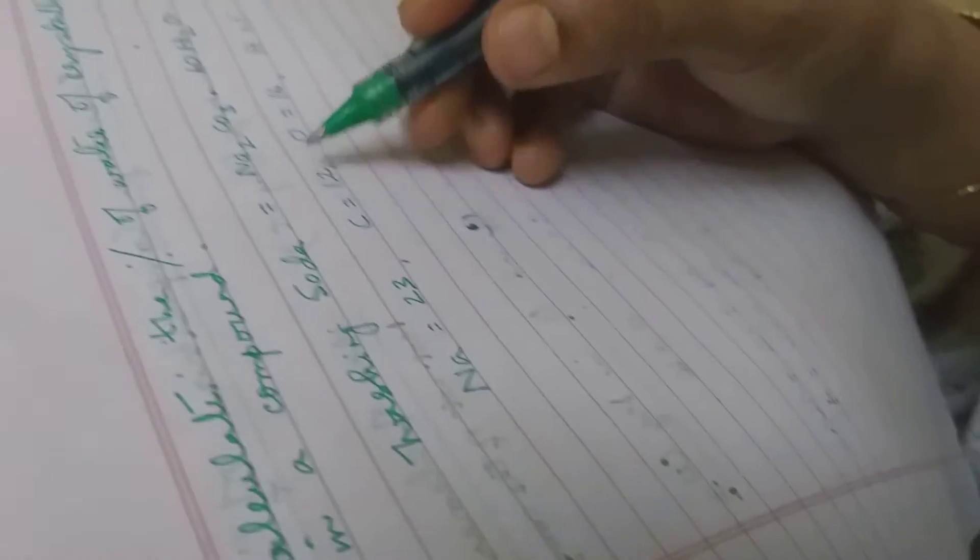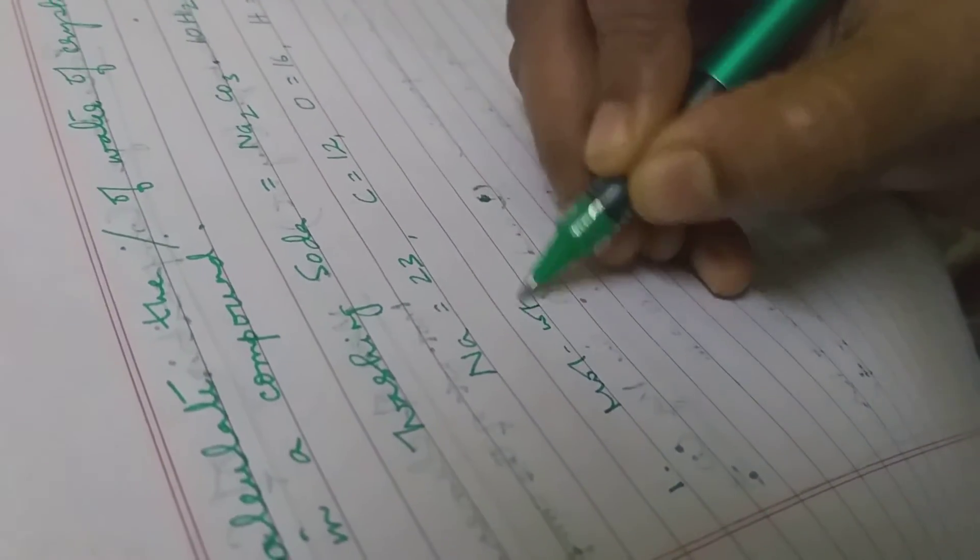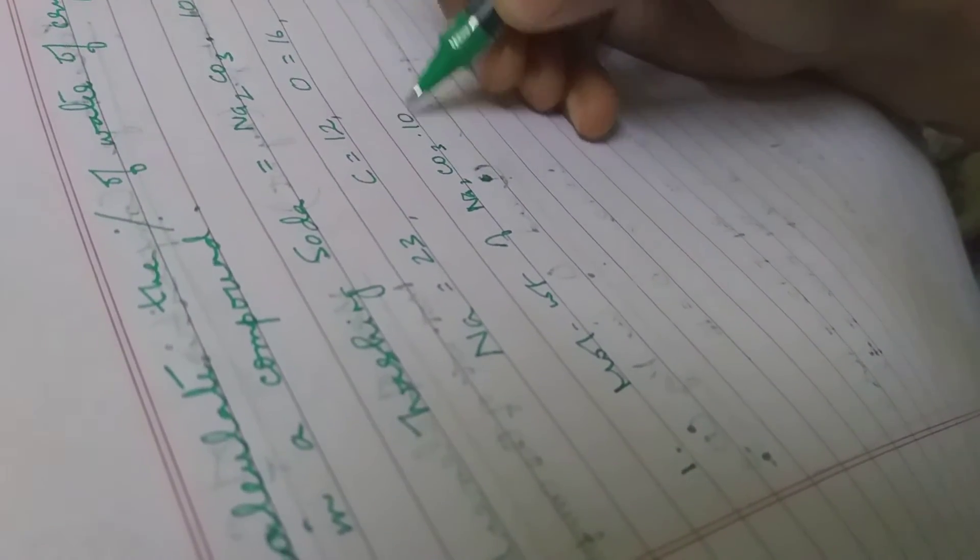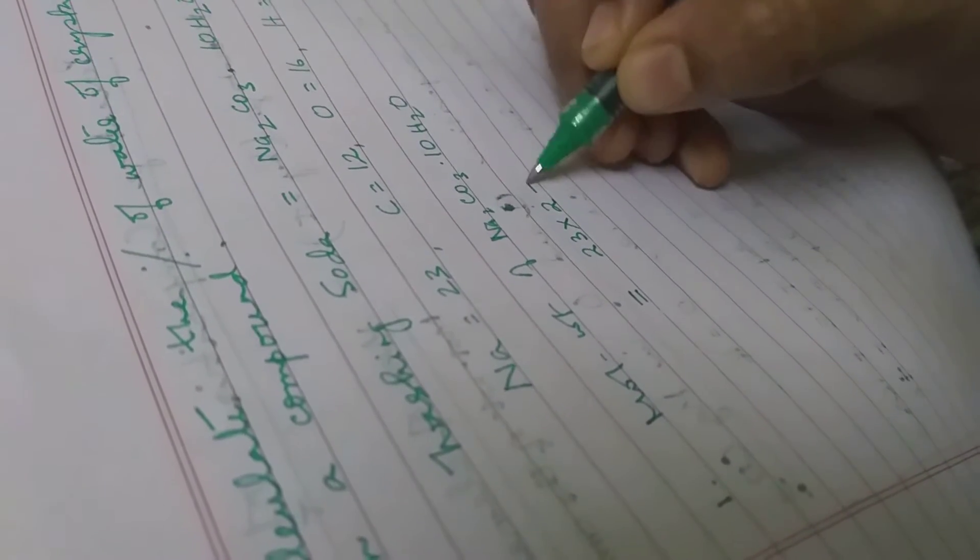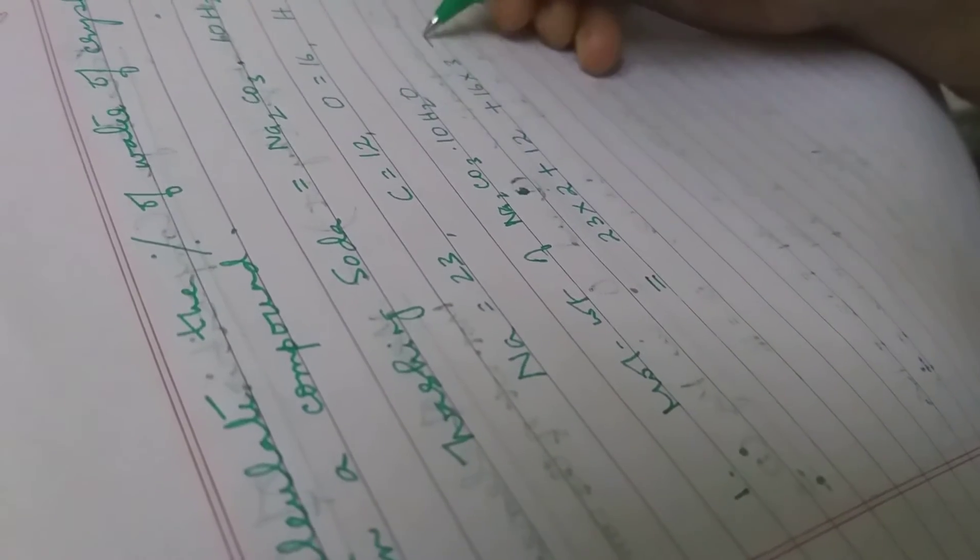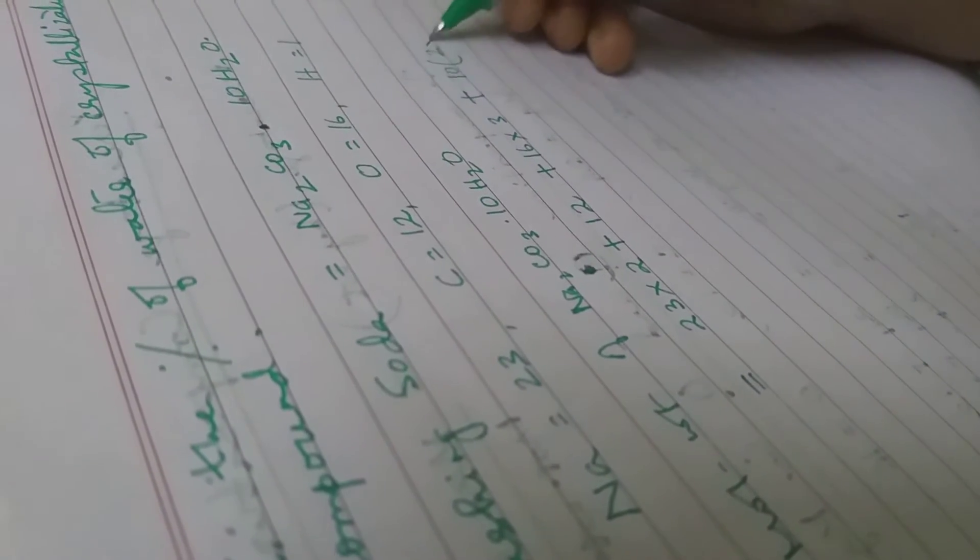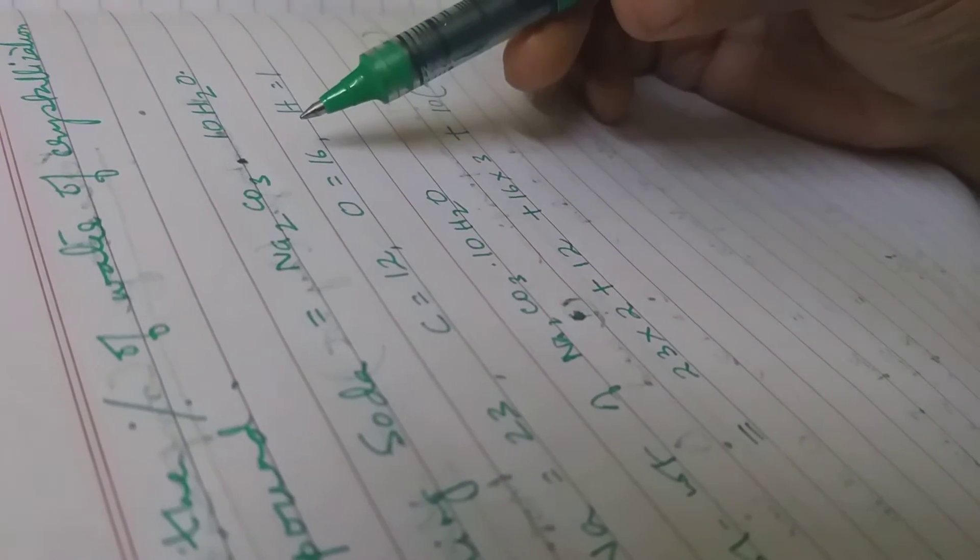So first step, I have to calculate the molecular weight of Na2CO3.10H2O. That will be equal to sodium 23 times 2 plus carbon 12 plus 16 times 3 plus—this dot means you have to add 10 molecules of water—so 10 times 2 times 1 plus 16. So this is how you are going to add the water of crystallization in the molecule.